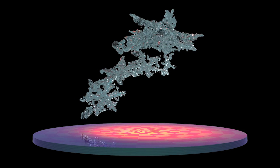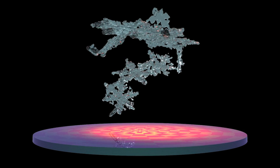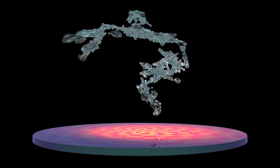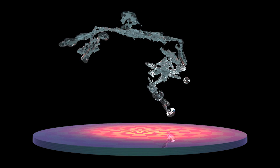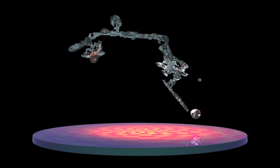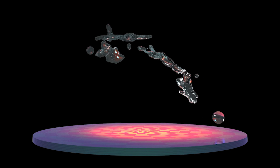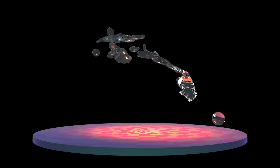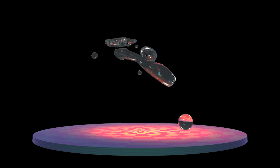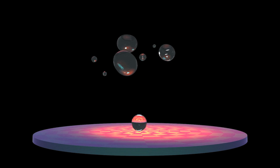For the first time ever, scientists have created a 3D model of a melting snowflake. 3D modeling, coupled with new research about melting snowflake behavior, serves as one of the first steps for creating better precipitation models used for weather forecasting and climate modeling in the future.